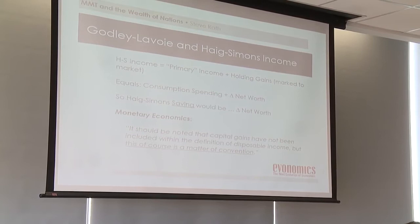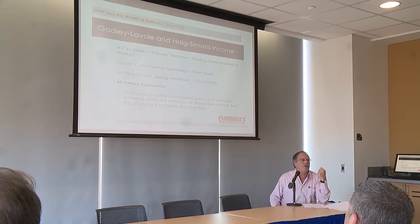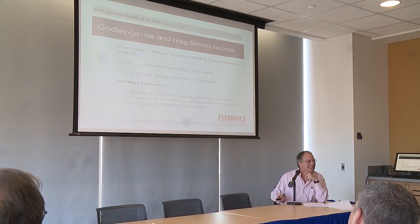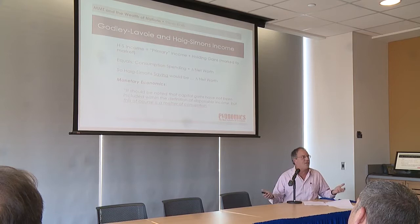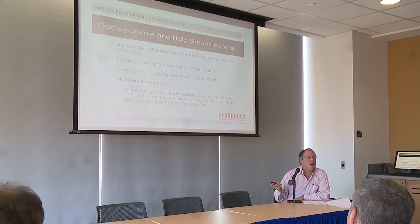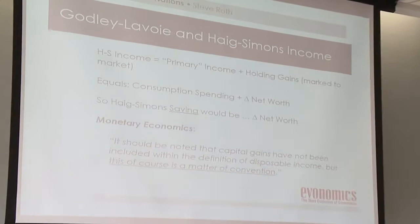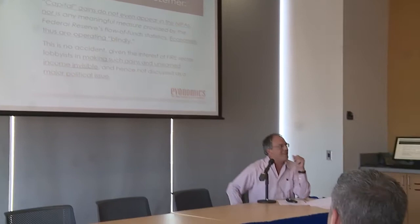Godley and Lavoie have a great discussion of Haig-Simons accounting. Haig-Simons income is private primary income plus holding gains — what I call comprehensive income, or what someone here might call fGDP. That equals consumption spending plus net worth, so Haig-Simons saving is simply change in net worth. Even Godley and Lavoie shy away from this — they don't actually include holding gains in income, saying it's 'only a matter of convention.'